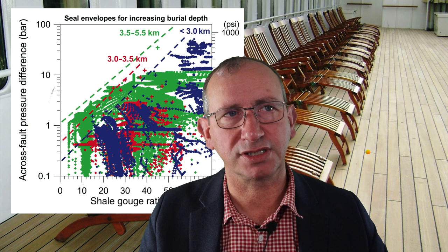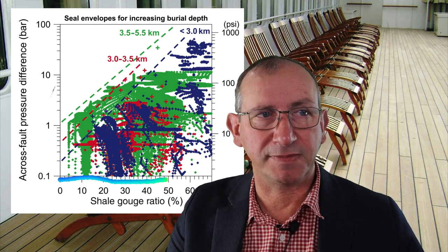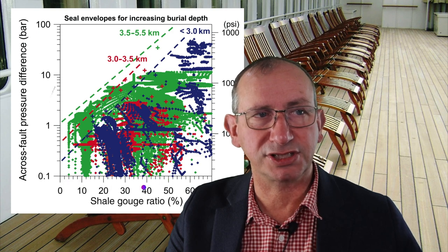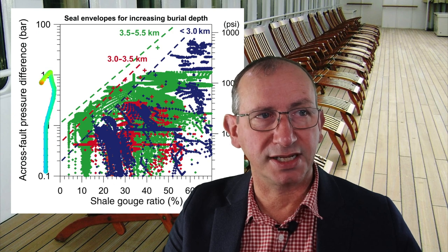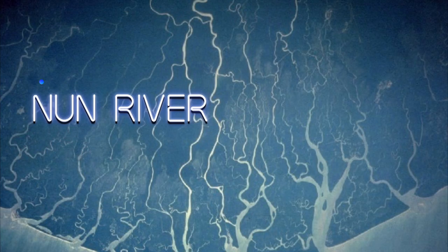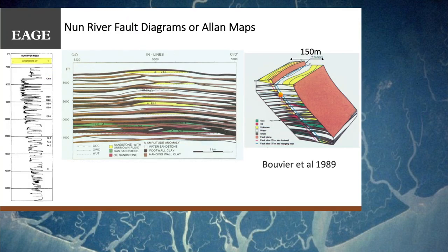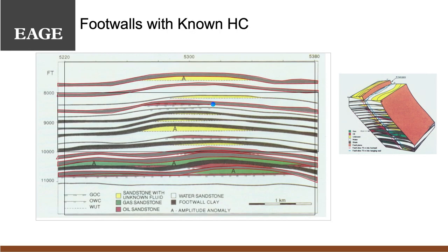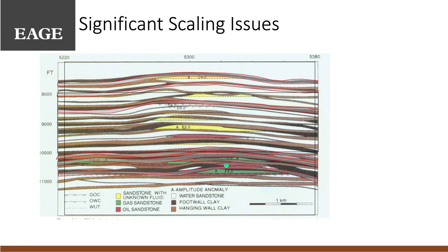We looked at the cross-fault pressure difference. This is a really nice iconic plot — the guys at Badley should be commended — which shows that increasing shale gauge ratio can be related to increasing cross-fault pressure difference. But we've been able to go and look at the datasets behind it. For the Nun River field in the Niger Delta, they went 75 meters in the hangwall to get coherent reflectors, and 75 meters in the footwall for the Allan map, meaning they're 150 meters apart — a big difference given the geometry of these fields. We looked at the footwall with the known hydrocarbon-water contacts digitized, and when we put that on top of the overall Allan map, things didn't match up.